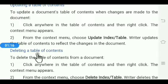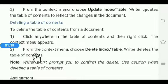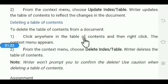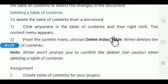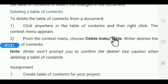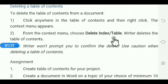To delete a table of contents from a document, click anywhere in the table of contents, then right-click, and from the context menu click on Delete Index and Table option. With this, Writer deletes the table of contents. Thank you.